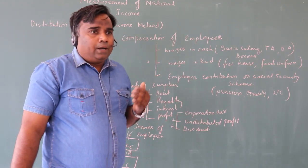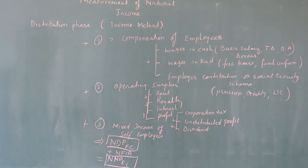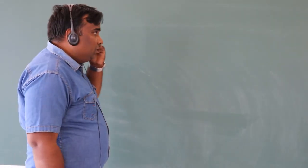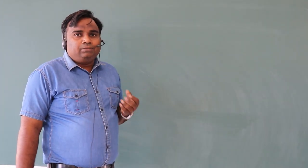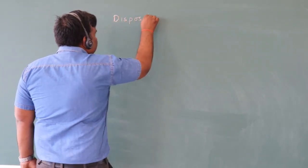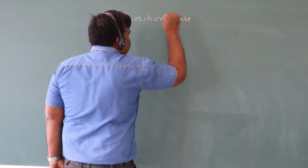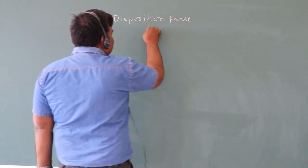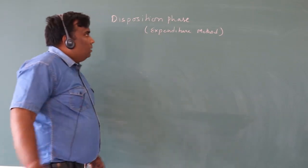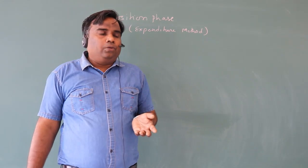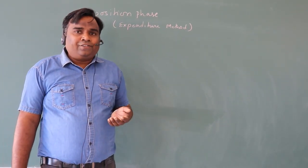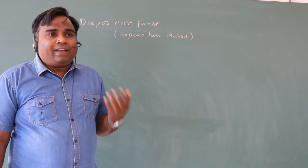Now we move to the second phase — the expenditure method. The disposition phase means that national income is disposed, i.e., spent. So we calculate national income using the expenditure method.